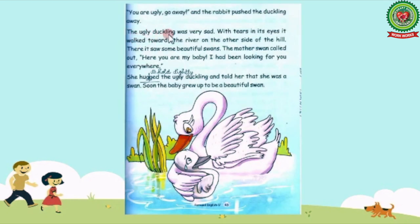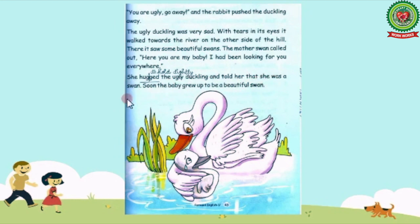The ugly duckling was very sad. With tears in its eyes it walked towards the river. On the other side of the hill, it saw some beautiful swans. The mother swan called out, 'Here you are, my baby! I had been looking for you everywhere.' She hugged the ugly duckling and told her that she was a swan. Underline the word 'hugged'. Hugged means to hold tightly.